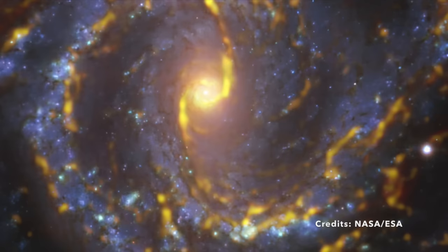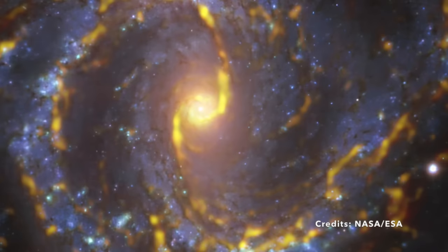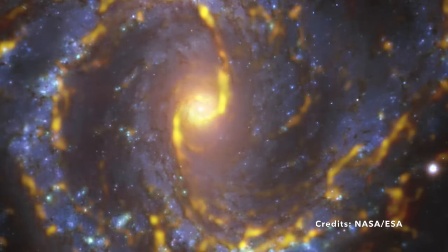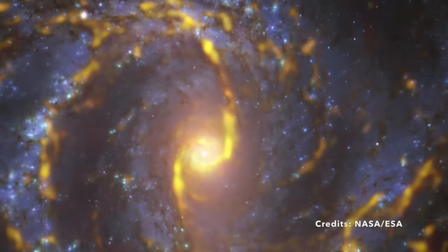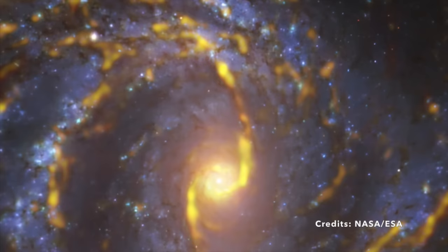Located in the constellation of Virgo, this galaxy isn't just around the corner. It's a staggering 55 million light years away. If you're wondering what a light year means, it's the distance light travels in one year. Just consider this: the light we see from NGC 4303 today actually started its journey 55 million years ago. So in a way, we're looking back in time.